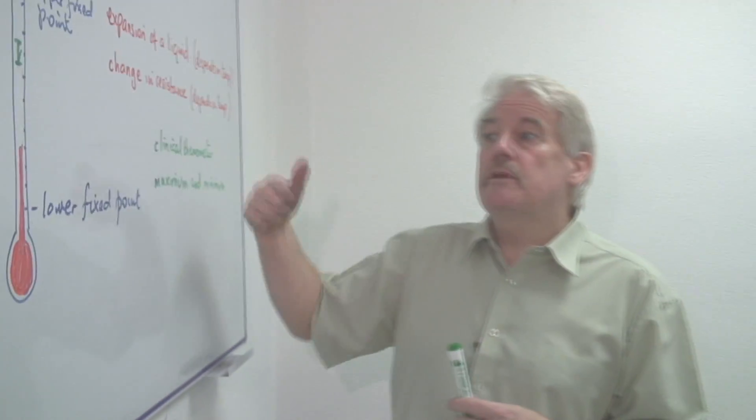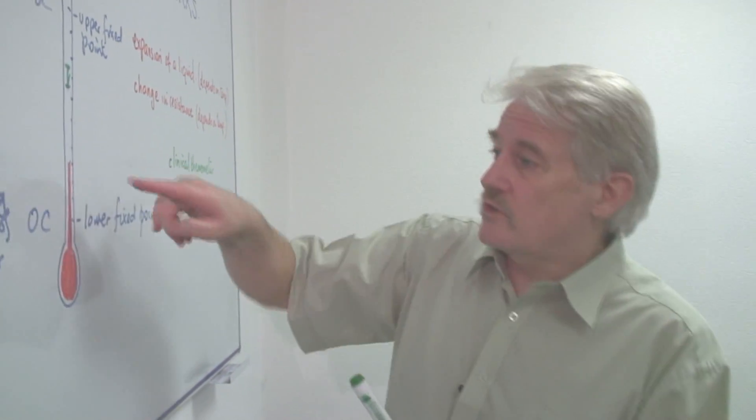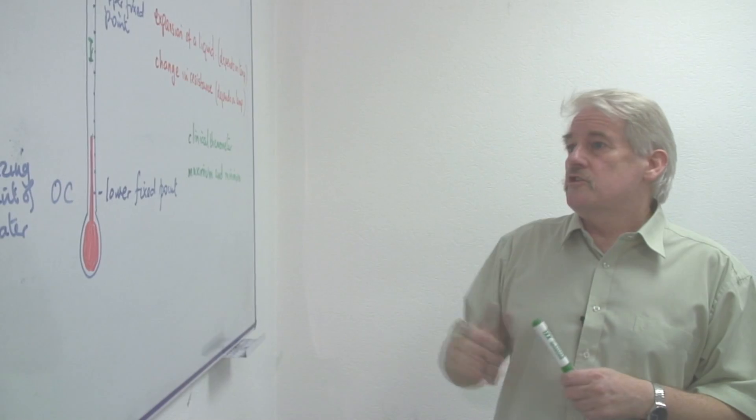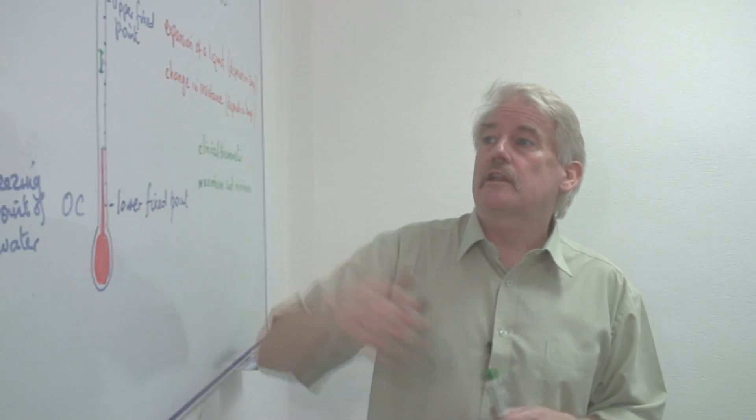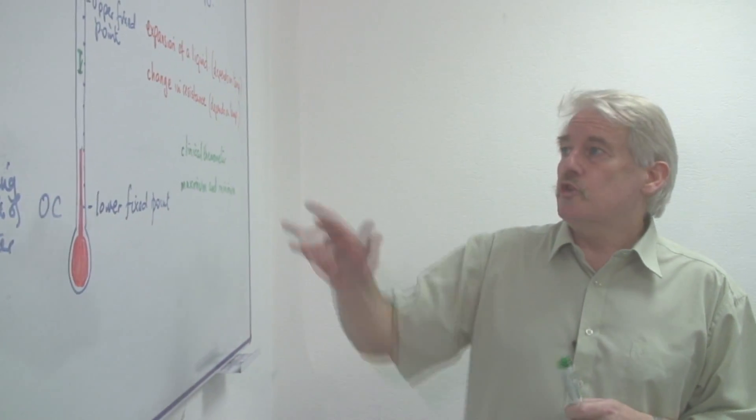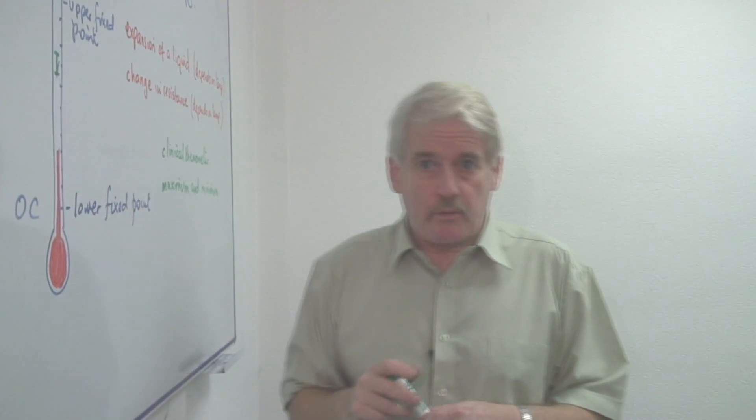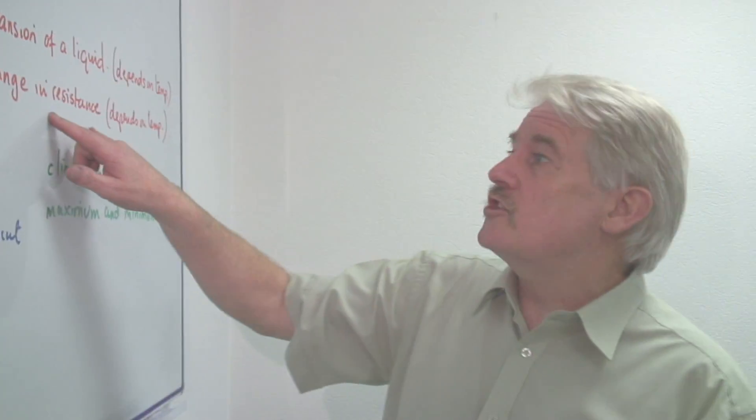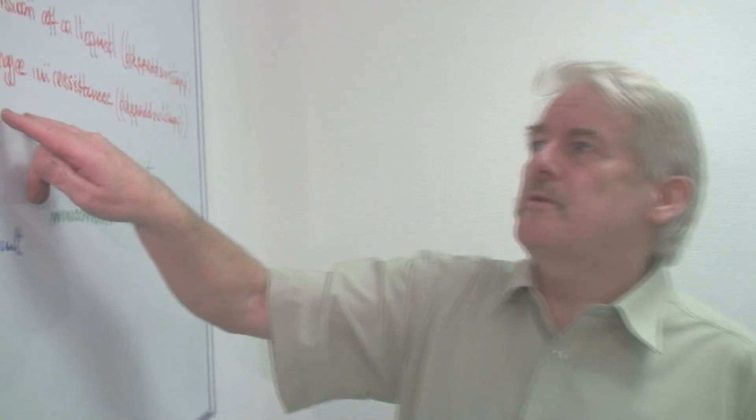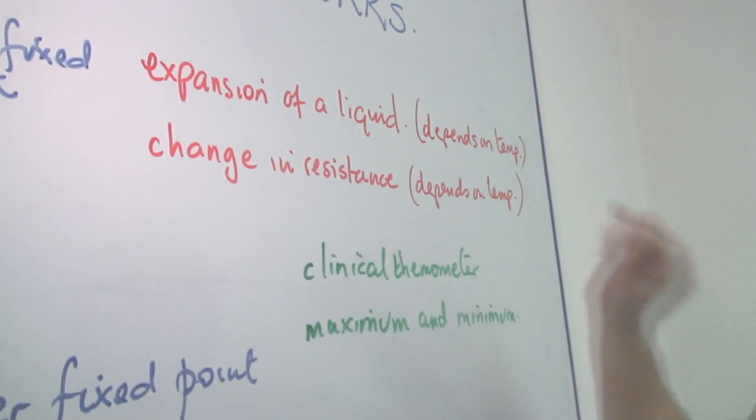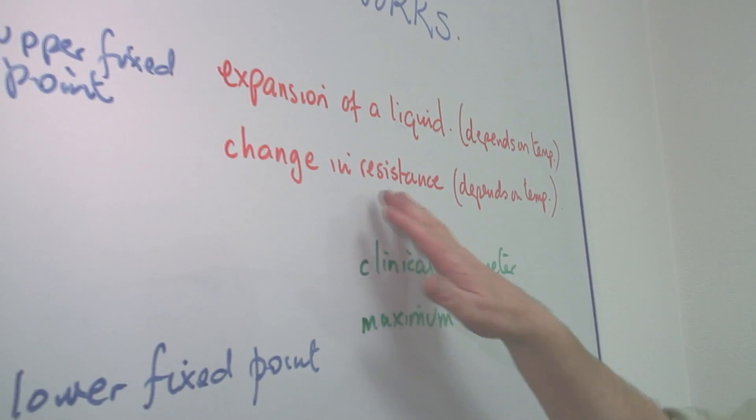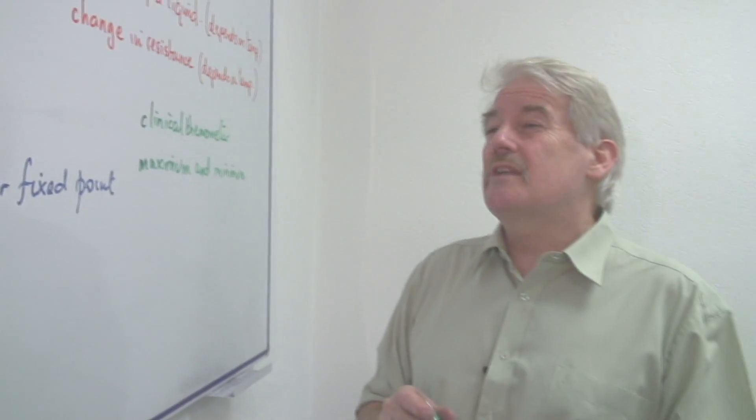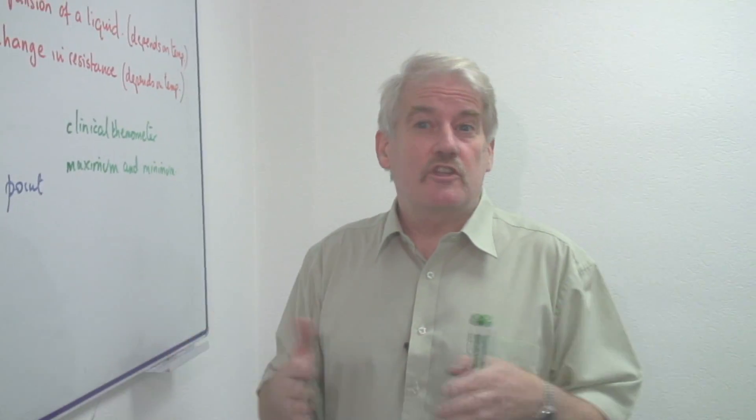And that was the maximum it went to, and there was another type which did the minimum as well. So those are different types of liquid-in-glass thermometer. Of course, we know that there are some thermometers which use the change in resistance of a piece of wire, and that depends on temperature too. But these types are rather more complex, and their workings are not so obvious and not so visible.